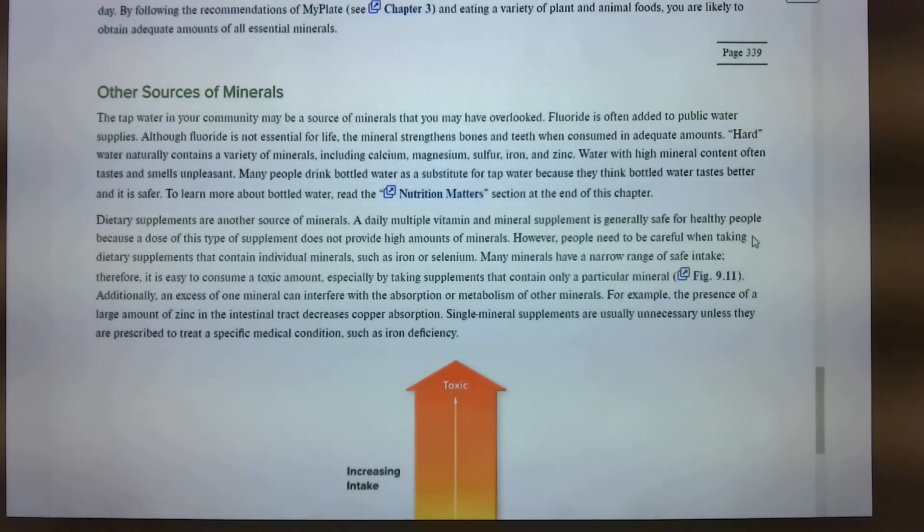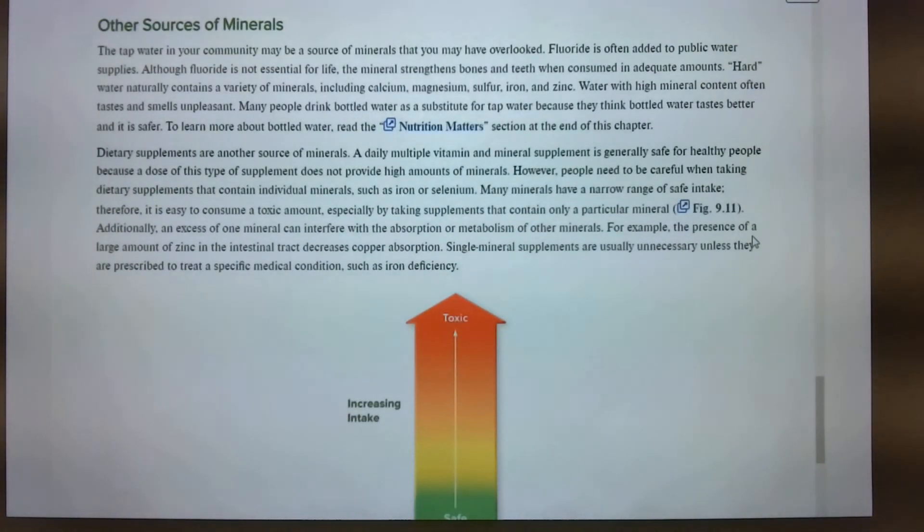With the toxic level, as far as fluoride, we will discuss that, but not just yet. Okay, I don't want to say that, but we will go over some toxicities of some of these things. Many minerals, let me back up. Fluoride is often added to water supplies. Bottled water is a substitute for tap water. Dietary supplements are another source of minerals. Many minerals have a narrow range of safe intake. Therefore, it is easy to consume a toxic amount, especially taking supplements that contain only a particular mineral. We've talked about the same thing with vitamins. Additionally, an excess of one mineral can interfere with the absorption or metabolism of other minerals. And that's, I think that's where we will stop at 9.4 and pick up there on Wednesday.